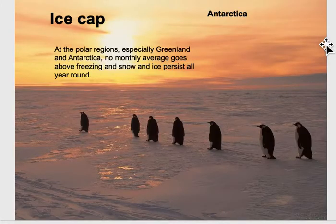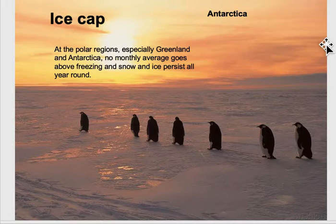Ice cap climates are all the way up towards the poles. Here's a picture of Antarctica — no month of the year has an average temperature above freezing, so you have snow and ice all year round.